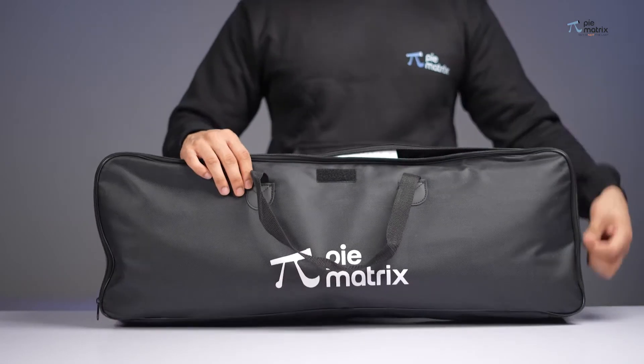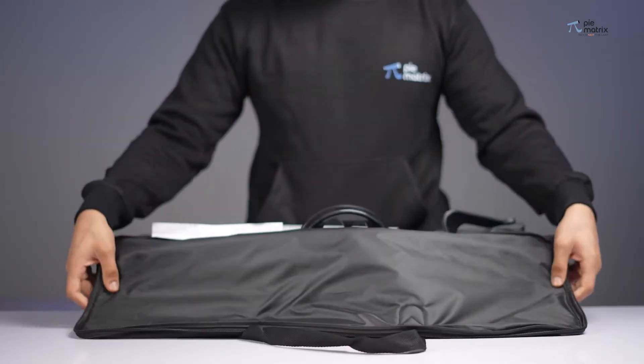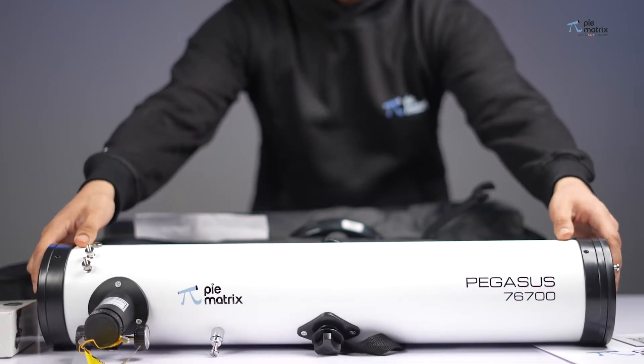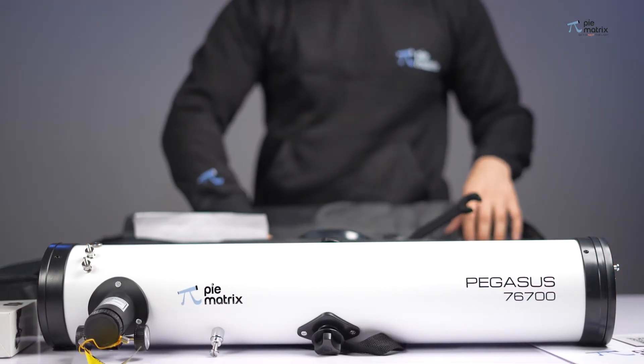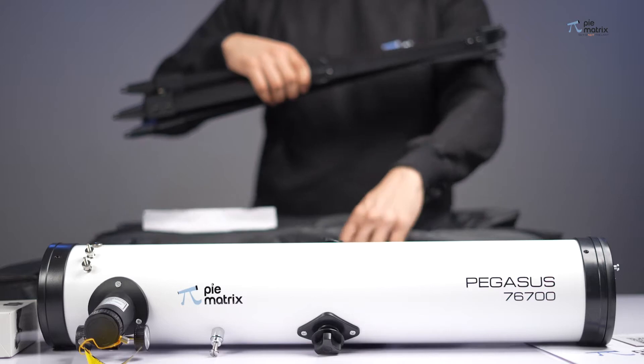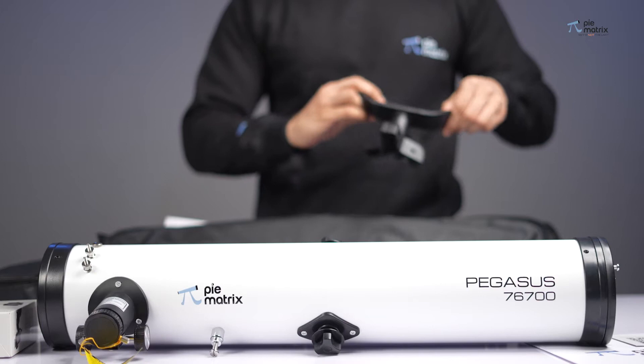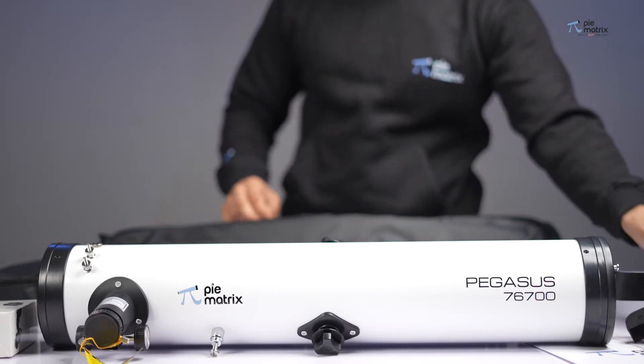After carefully taking it out of the box, we see a white colored matte finish 76mm optical tube assembly enclosed with a dew shield. Along with that, we also get the tripod assembly followed by a lot of other useful accessories which we will explore later in this video.